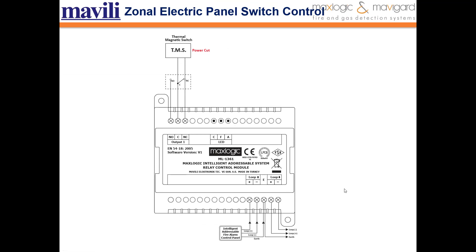For zonal electric panel switch control, in order to cut off energy in case of fire, a relay control module can be used by connecting to the relay output of a thermal magnetic switch. As shown in this example, the relay control module is connected to the thermal magnetic switch to cut off power.